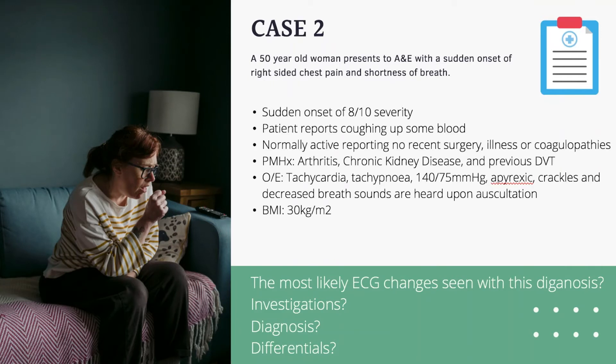Moving on to the second case: a 50-year-old woman presenting to A&E with sudden onset right-sided chest pain and shortness of breath. She describes the onset as quite sudden, rating pain at about eight to ten in severity. The patient reports coughing up some blood. She's normally quite active with no recent surgery, illnesses, or bleeding conditions. Past medical history includes arthritis, chronic kidney disease, and previous deep vein thrombosis. On examination, the patient is tachycardic, tachypneic, blood pressure 140/75, apyrexic. Crackles and decreased breath sounds are heard on auscultation. BMI is 30.